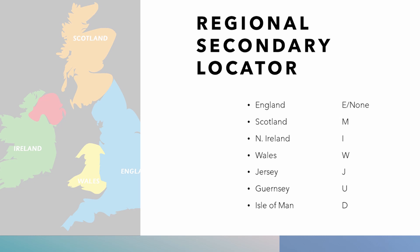UK regional secondary locators are as follows: England, where required, is an E, but typically none is required. Scotland is an M. Northern Ireland is an I. Wales is a W. Jersey is a J. Guernsey is a U. And the Isle of Man is a D.